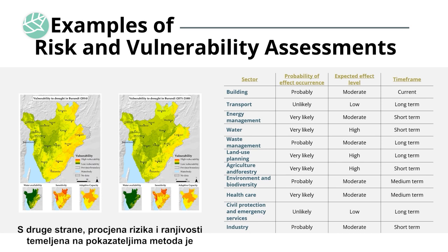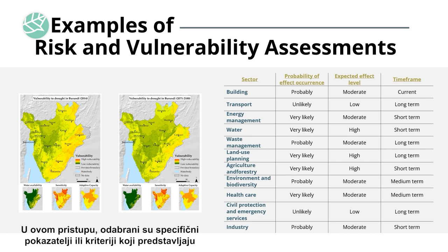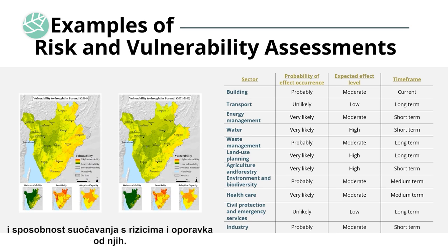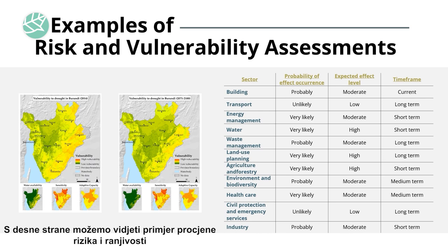On the other hand, indicator-based risk and vulnerability assessment is a method used to evaluate the vulnerability of a system, organization, or community to specific risks. In this approach, specific indicators or criteria are selected to represent the various components of vulnerability, such as exposure to hazards, resources available, and the ability to cope with and recover from risk. The indicators are then quantified and used to evaluate the vulnerability of a system, organization, or community. On the right, we can see an example of an indicator-based risk and vulnerability assessment of extreme weather events.